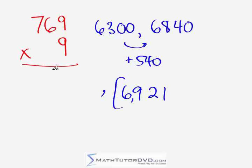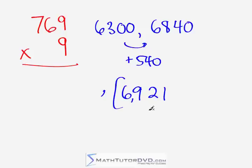This is about as complicated as it gets, because when you multiply the middle numbers you're rolling over and changing digits. But it's the exact same process for all of these problems.